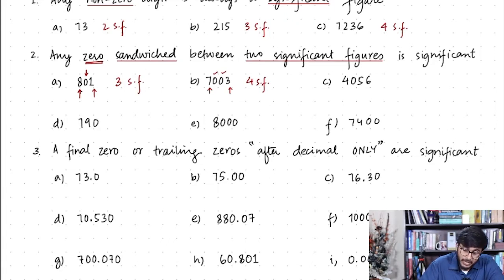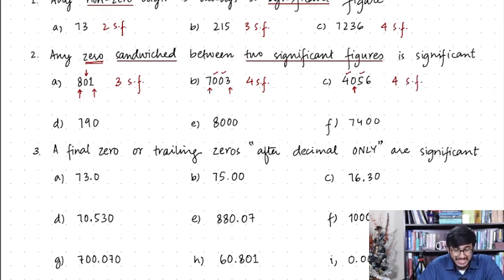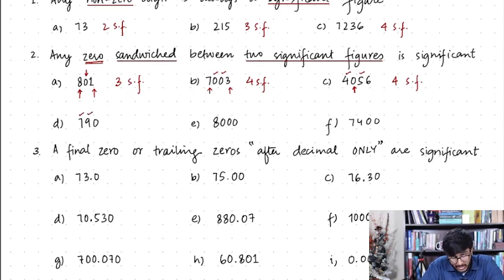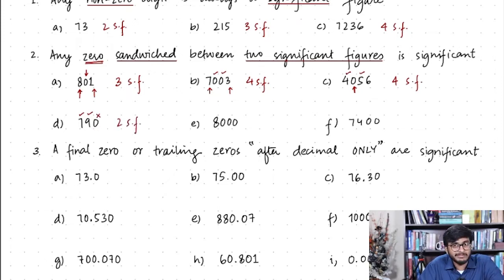For 4056: 4 and 5 are significant, so the zero between them is also significant — four significant figures. For 790: the 7 and 9 are both significant, but the zero at the end is not sandwiched between them; it's a trailing zero, so it's not significant. That gives only two significant figures.